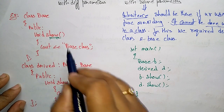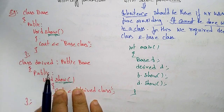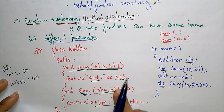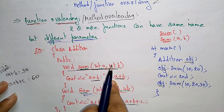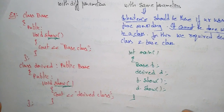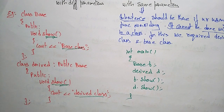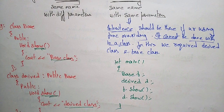If you are using the same function name with the same parameters, then you go for the inheritance concept — that is method overriding. If it is the same name with different parameters, write within a single class — that is function overloading. If you are using function overriding, you must use two classes, and compulsorily it should be the inheritance concept. In the next video I will explain operator overloading. Function overloading and operator overloading are the compile-time or static polymorphisms. Thank you.